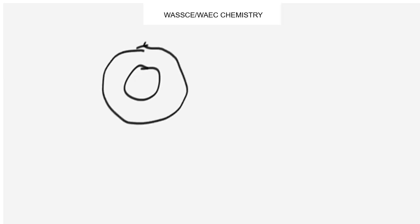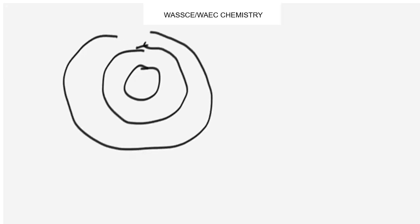Let me draw the structure of an atom. Now, what is an atom? An atom can be defined as the smallest particle of an element that can take part in a chemical reaction. Atoms have sub-particles known as the protons.